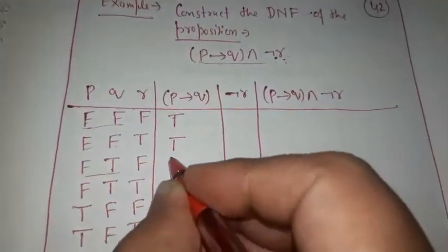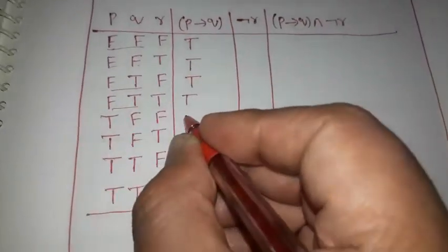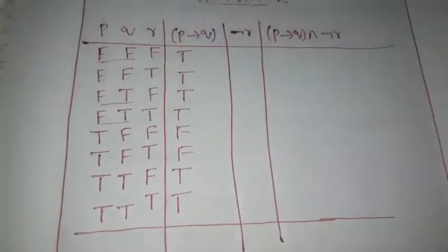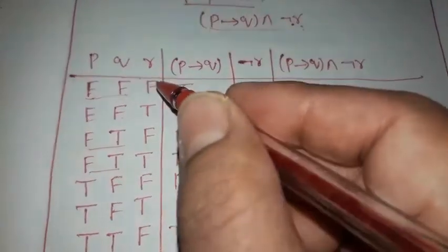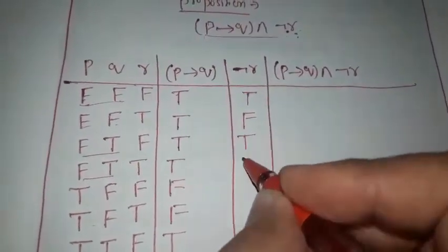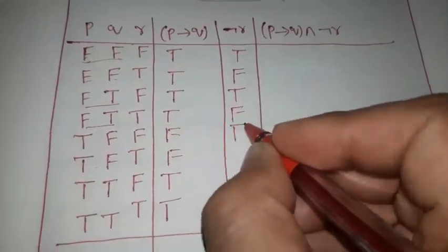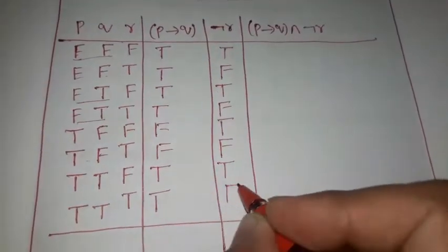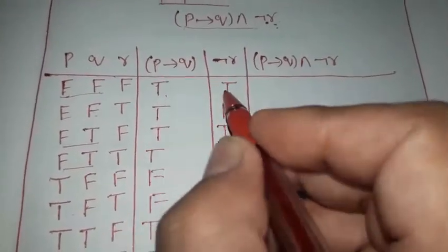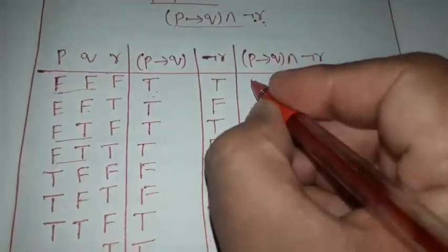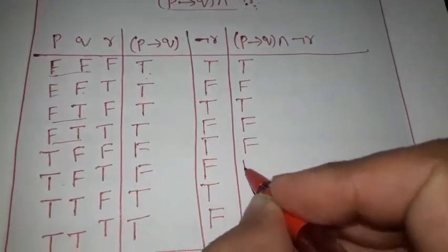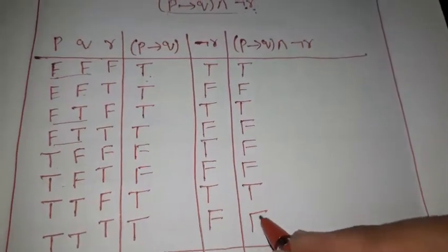The values of p→q are: F,F→T; F,T→T; F,F→T; F,T→T; T,F→F; T,T→T; T,F→F; T,T→T. Then ¬r: the negation of r gives alternating T,T,F,F,T,T,F,F. Now computing (p→q)∧¬r gives: T,F; T,F; F,F; T,F — that is: T,F,T,F,F,T,F,F.